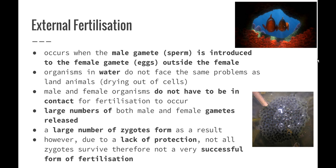On the other hand, external fertilization occurs when the male gamete — the sperm — is introduced to the female gamete eggs outside of the female. If you remember the opening scenes of Finding Nemo, the female lays lots and lots of eggs, the male then comes and deposits his sperm over the top, and those eggs then become fertilized. The reason why this works is that organisms in water do not face the same problems as land animals, such as the cells drying out.